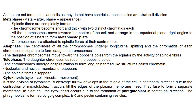Cytokinesis — 'cyto' meaning cell, 'kinesis' meaning movement — is the division of cytoplasm. A cleavage furrow develops in the middle of the cell in a centripetal direction due to the contraction of microtubules, occurring until the edges of the plasma membrane meet and fuse to form a separate membrane. In plant cells, cytokinesis occurs due to the formation of the phragmoplast in a centrifugal direction. The phragmoplast is formed by the Golgi complex, endoplasmic reticulum, and pectin-containing vacuoles.